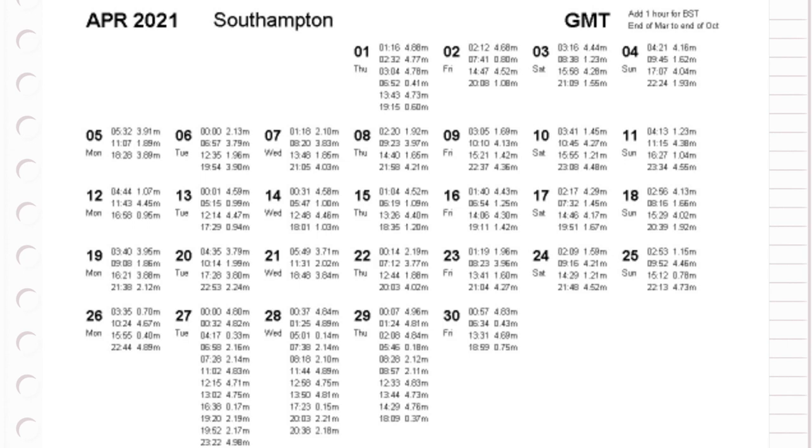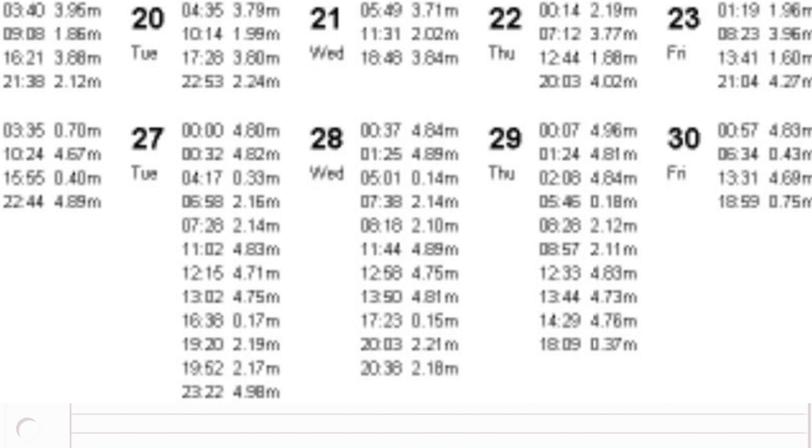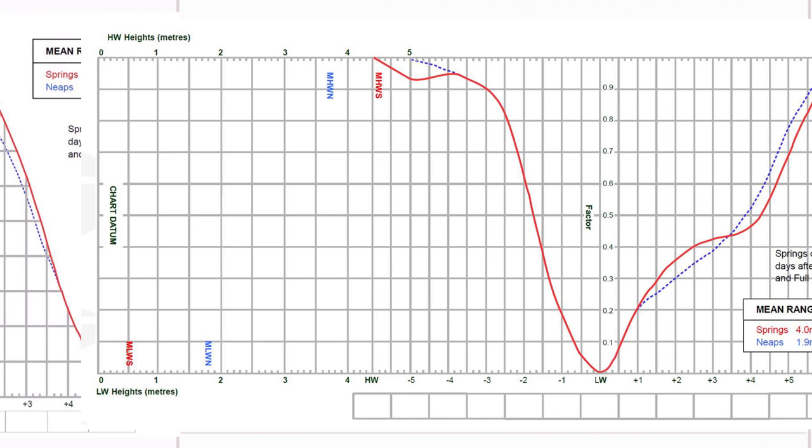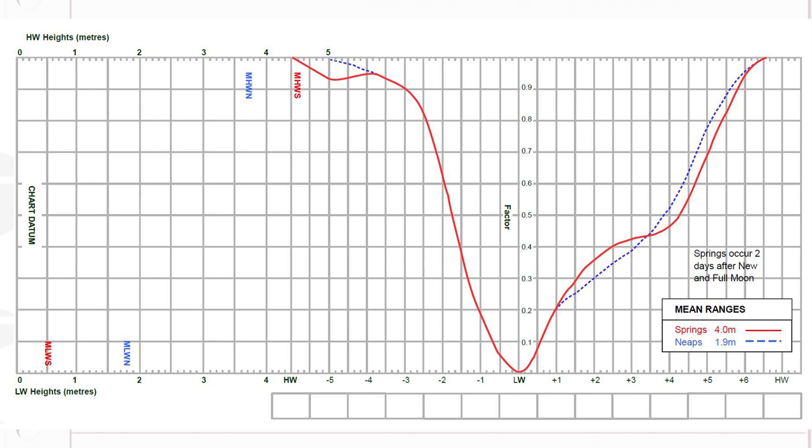Just up the road in Southampton things are even stranger, for there they have double height tides. Just look at these predictions for three days in April. The movement of water there is so unusual that even a normal tidal curve is not good. Here is the Southampton tidal curve, very different from Falmouth.